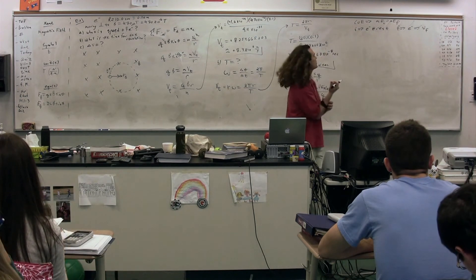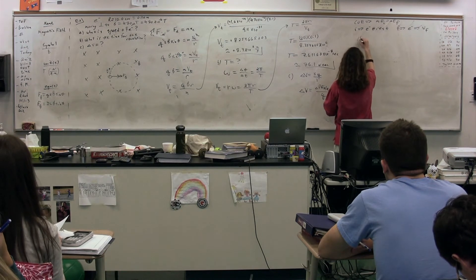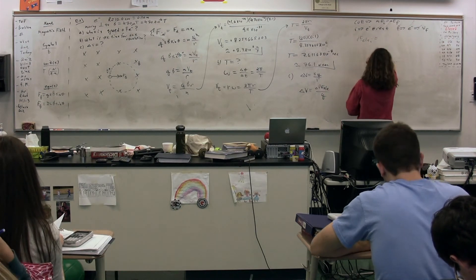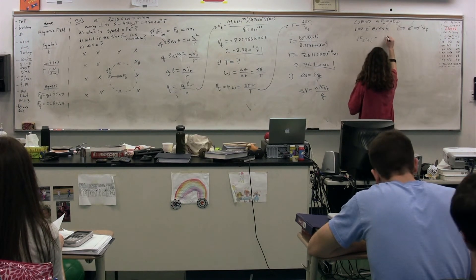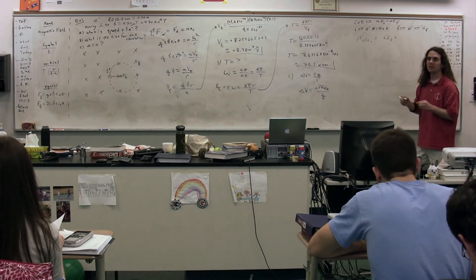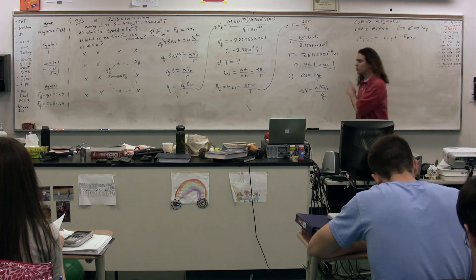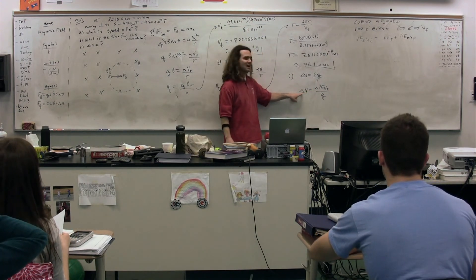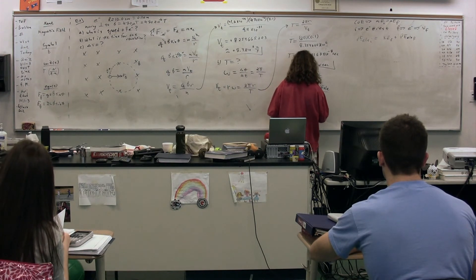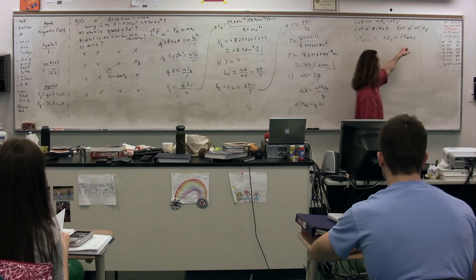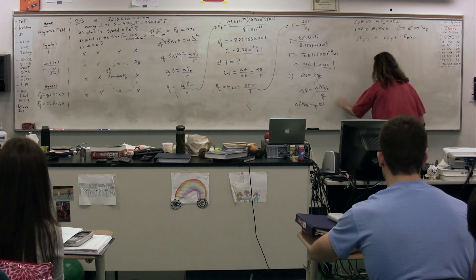What sort of mechanical energy does the charge start with? Shu: electric potential energy. It has no kinetic energy initially because it's at rest. And finally it has kinetic energy final and electric potential energy final. Now notice — what we're trying to get to is the change in electric potential energy, because we're trying to find the electric potential difference. The change in electric potential energy equals the charge times the electric potential difference.